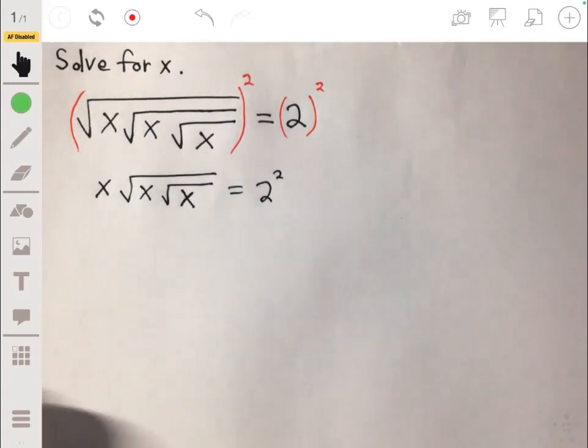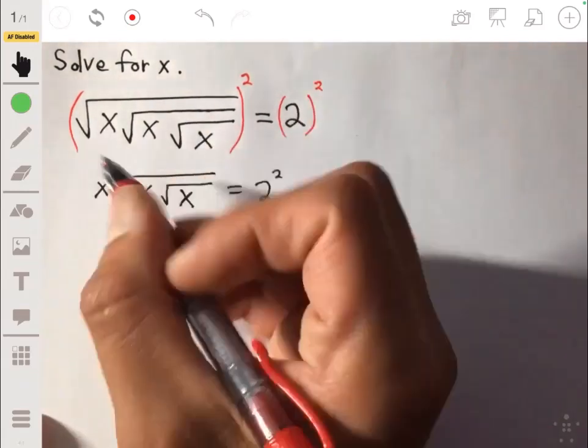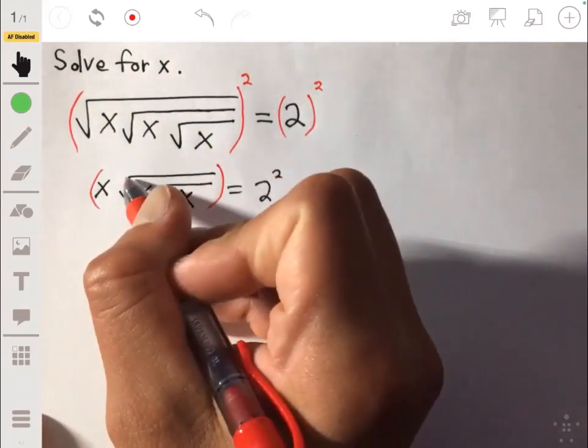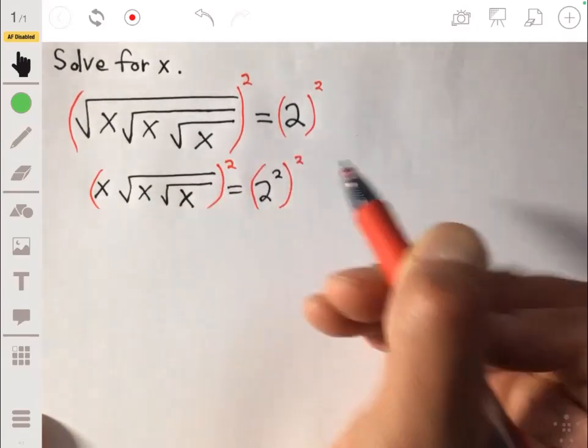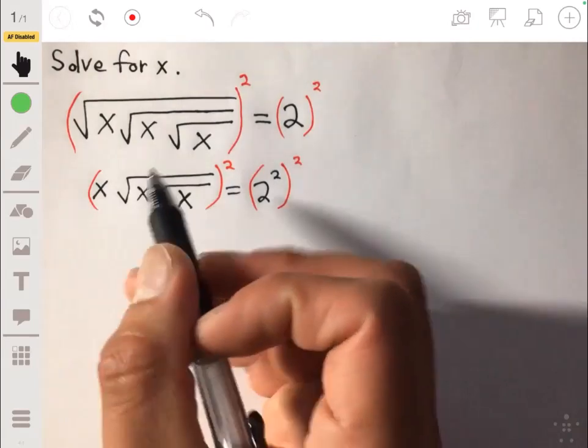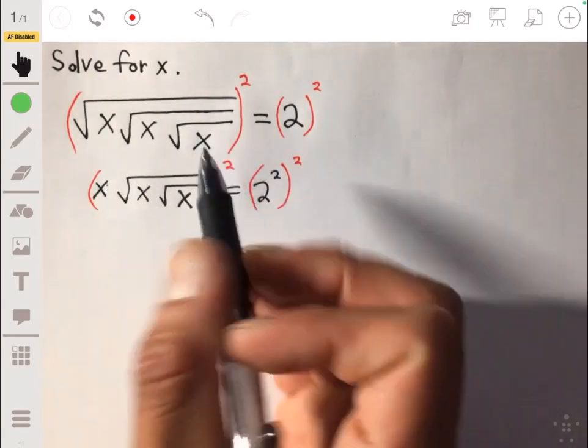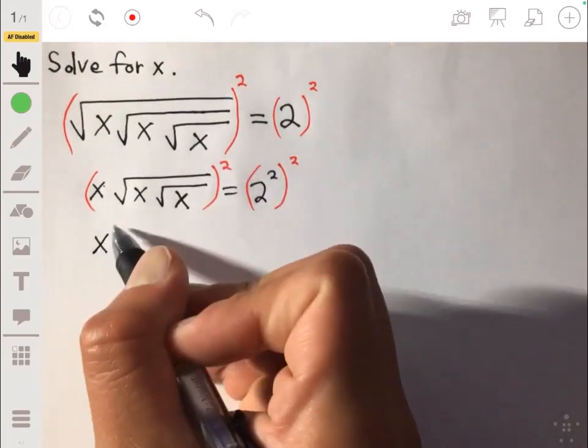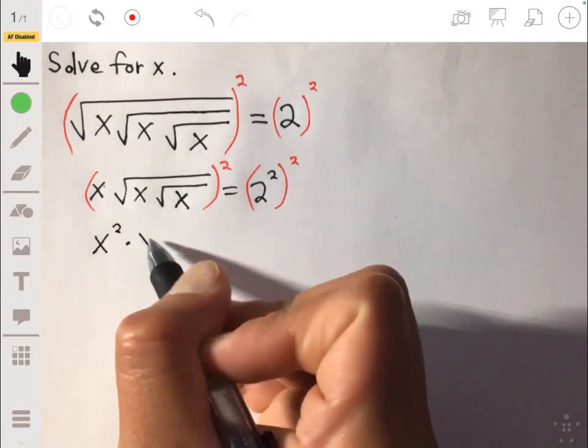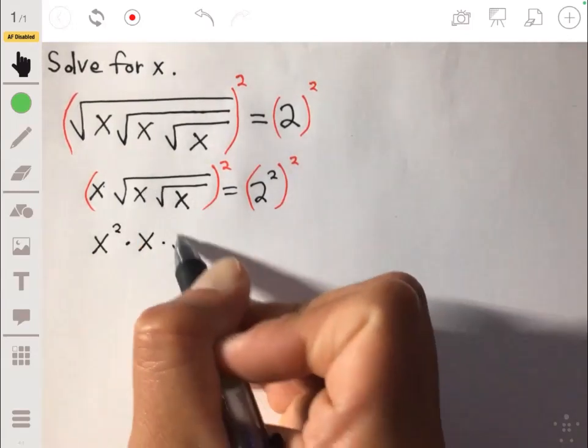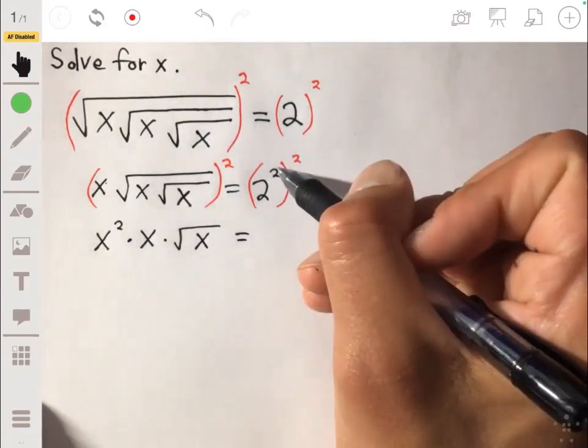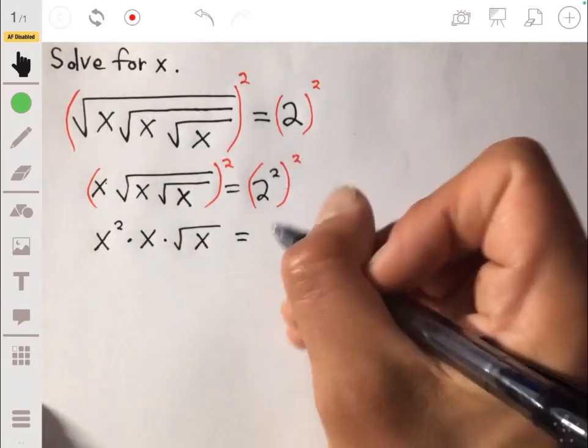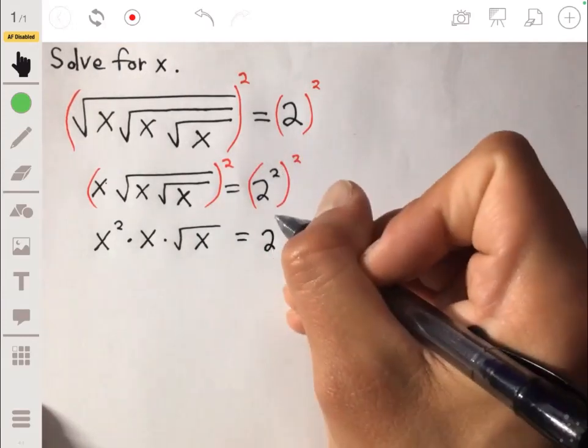Then we basically do it again because we want to now get rid of this square root, so we're going to square each side again. Now we're going to get x to the second power though, be careful about that, times x times the square root of x. Let's make sure to multiply these powers now, so it'll be 2 to the fourth.